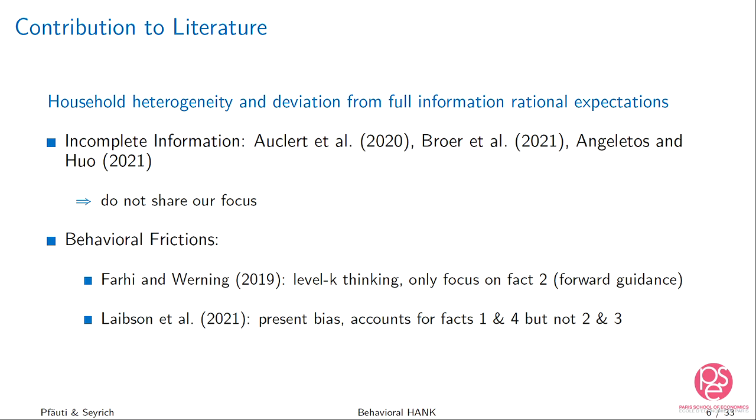Most closely related to us is the Farhi and Werning paper, where they look at level-k thinking, whereas we focus on cognitive discounting. They only focus on resolving the forward guidance puzzle, whereas we focus on all four facts. In fact, they even turn off, on purpose, fact four — and this is really where we come in and show how it matters and how it interacts with the behavioral frictions.